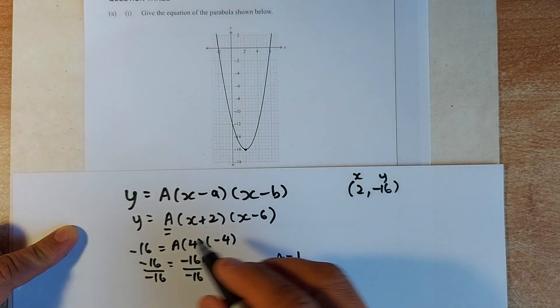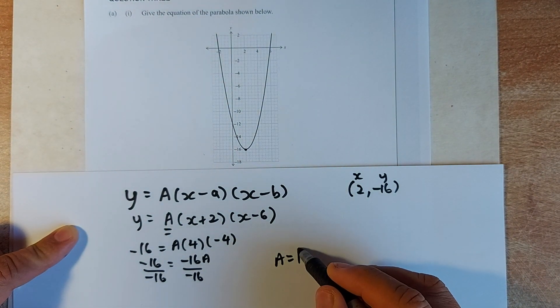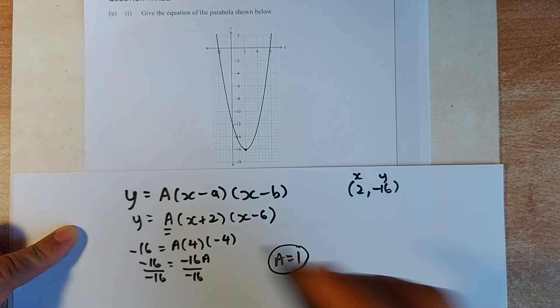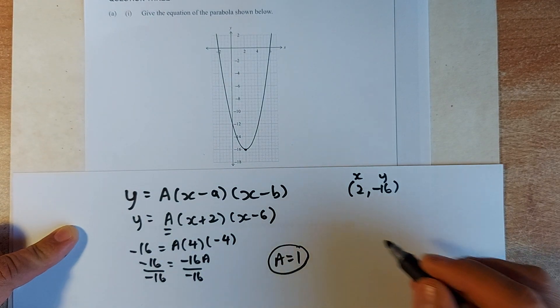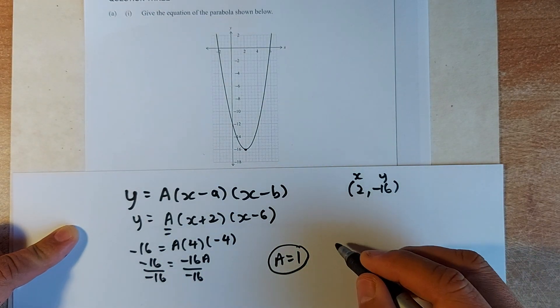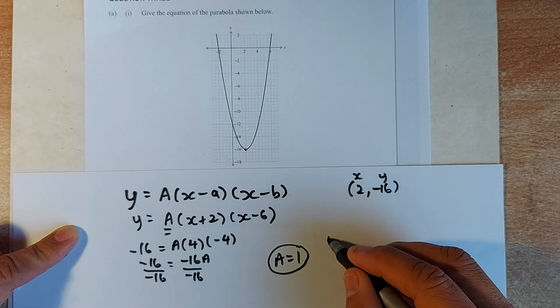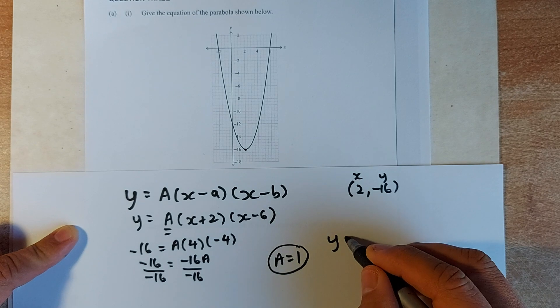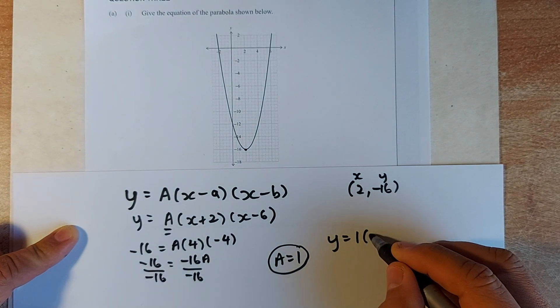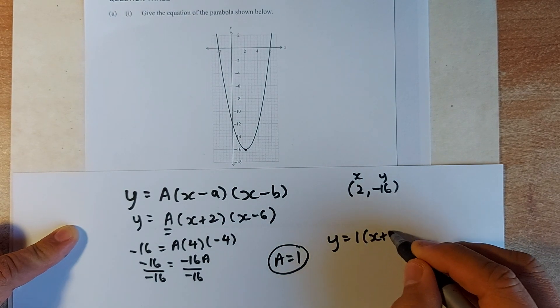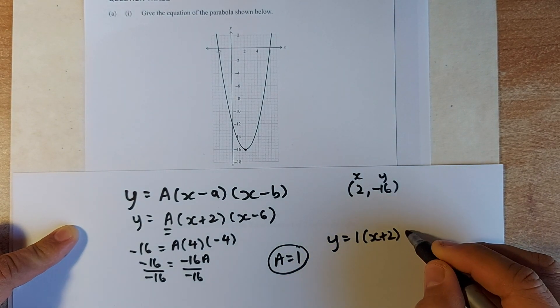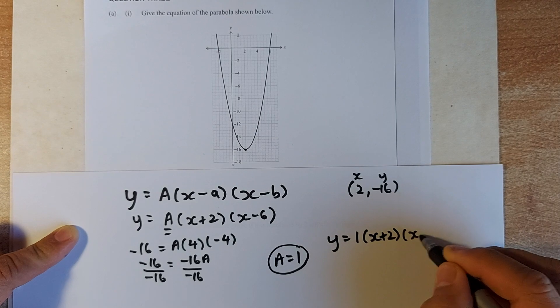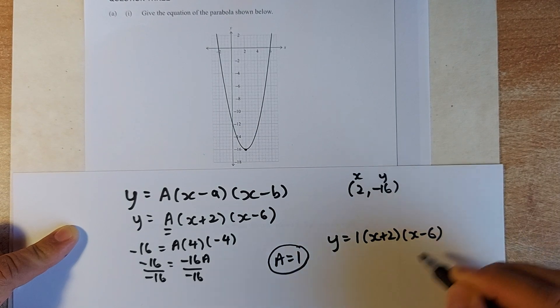Once you've got a equal to 1, you're going to substitute that value into the original equation. So, the equation of the graph is going to be y equals to 1 times (x plus 2) times (x minus 6).